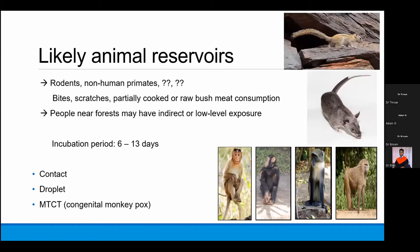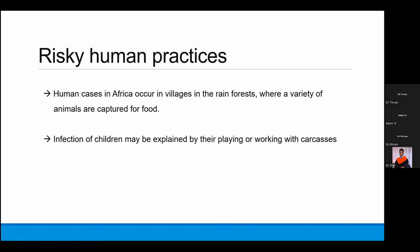The incubation period is about one to two weeks. Contact and droplet transmission routes are frequently cited, but there are also a few case reports of mother-to-child transmission, labeled as congenital monkeypox when mothers acquire it late during pregnancy. Most human cases in endemic parts of Africa occur in villages where a variety of animals are used for food, and children may come into contact with monkeypox when playing with dead animals or carcasses.